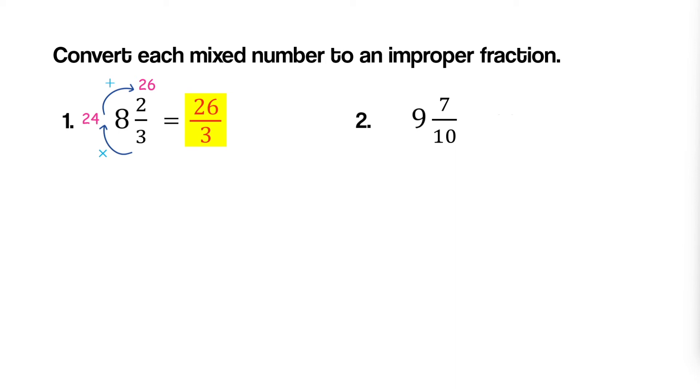Now let's convert nine and seven-tenths to an improper fraction. Multiplying the denominator by the whole number results in ninety. Adding seven to this gives us ninety-seven, which becomes our numerator, with a denominator of ten.